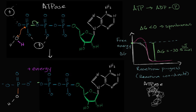Hopefully this gives you a little bit more appreciation for ATP and the reaction by which hydrolysis can occur. This is called hydrolysis because, at least in this example, we're using a water molecule to break it up and take off a phosphate group.